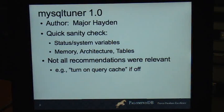And the intention was to be a quick sanity check. So it looked at some status variables and some system variables. It looked at memory architecture tables, made sure you were on a 64-bit system, if not gave a warning. But not all the recommendations it had were relevant. So if the query cache was off, it would say turn it on, which might have been okay 10 years ago, but not so much now. Now the recommendation is turn it off.